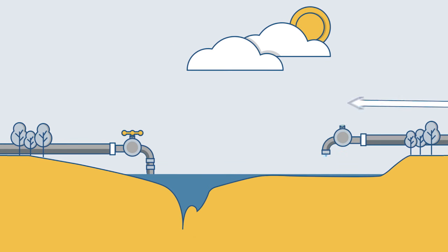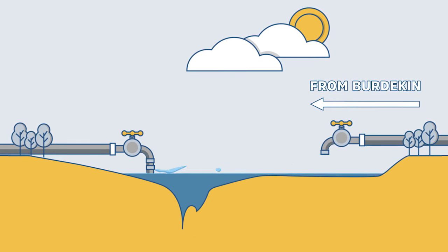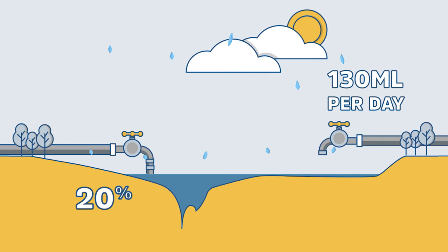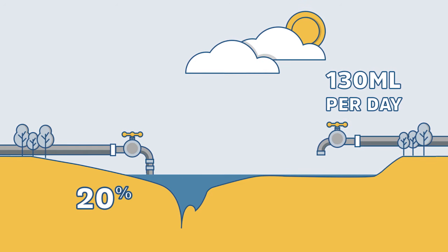If we start pumping from the Burdekin Dam before Ross Dam hits 20%, most of the 130 megalitres we can pump each day would evaporate into the atmosphere.